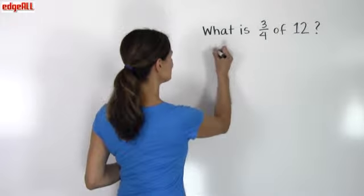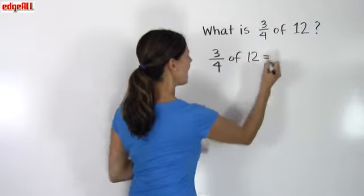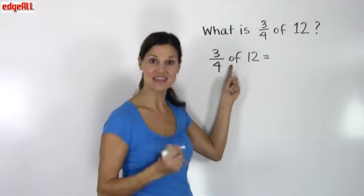And so what I do with a problem like this, 3 fourths of 12, I can replace this of with a multiplication sign. They mean the same thing.